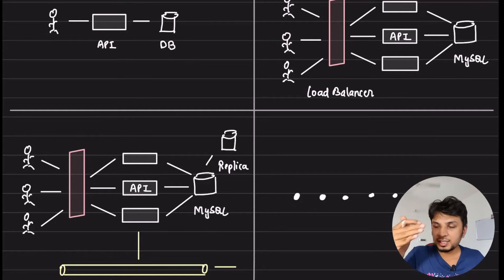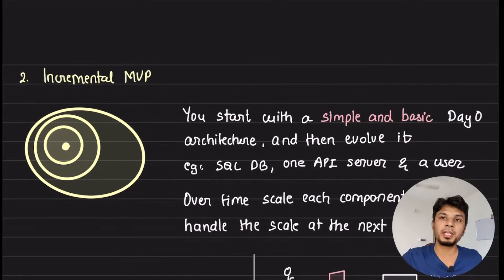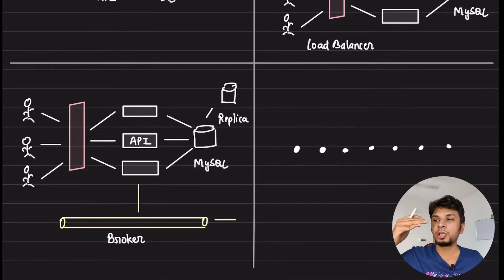So tackling one scale or one level at a time is how you go for an incremental MVP approach where incrementally you are trying to evolve your system to just be able to sustain the next scale.